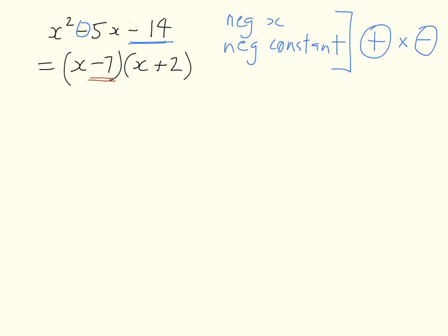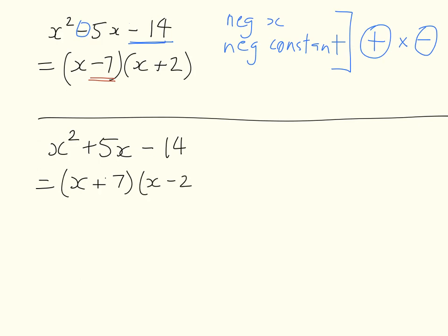Now if we reverse this scenario, just change the middle term sign, x squared plus five x minus fourteen. Same two numbers, we've got the same two numbers, we're going to use seven and two, but this time we'd have to have plus seven and minus two, because we need the bigger number to be positive, so we get positive five.